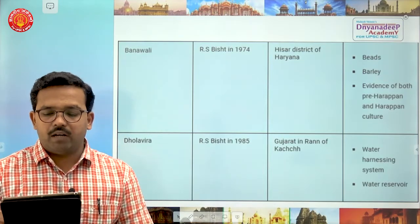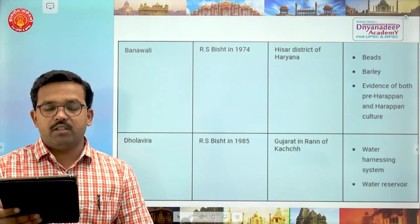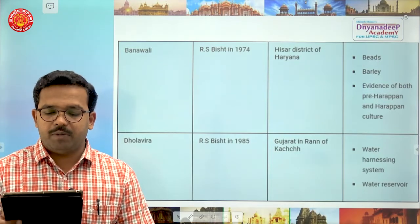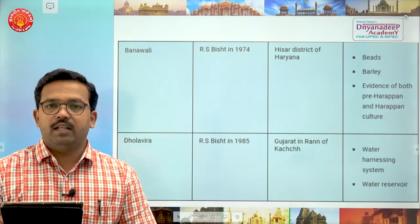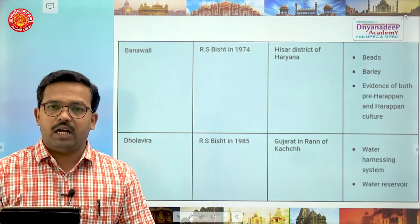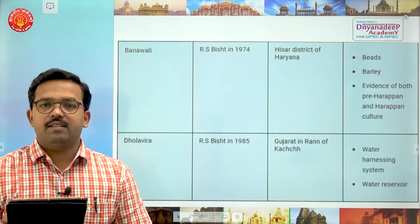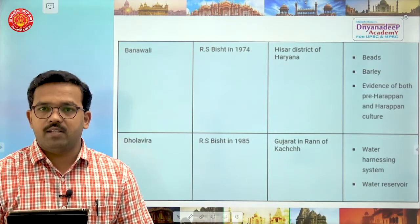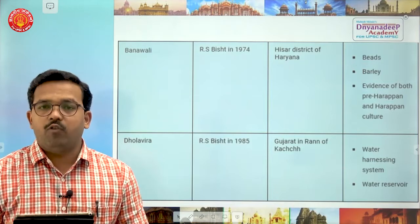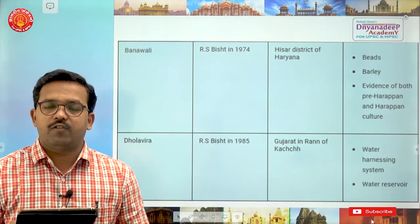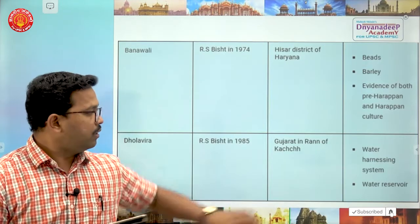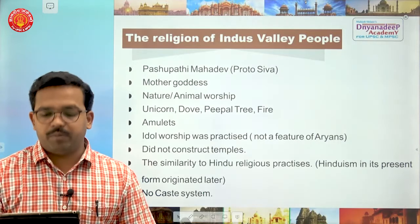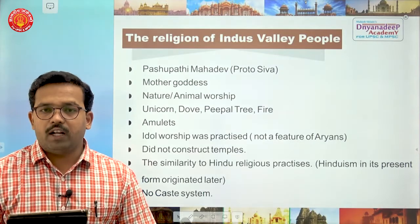The next site is Dholavira, excavated by R.S. Bisht in 1985, in the state of Gujarat in the Rann of Kutch. Here they discovered a water harnessing system, water harvesting system, and water reservoirs.